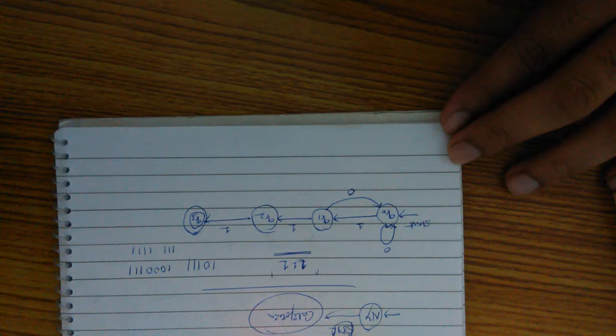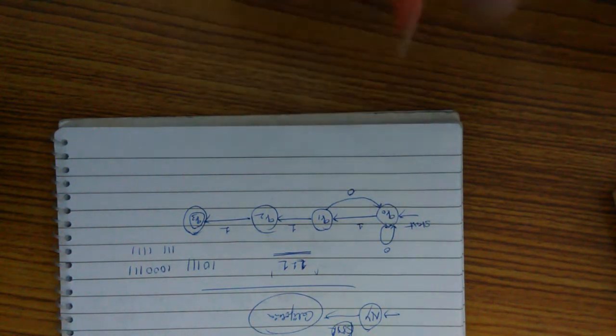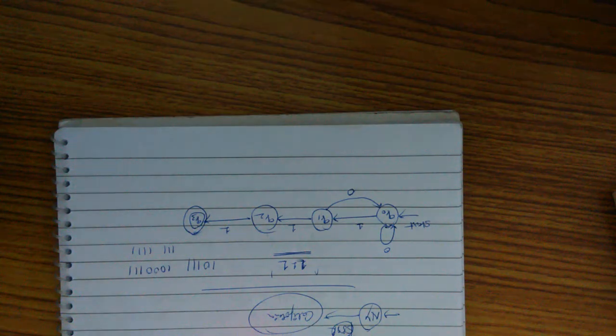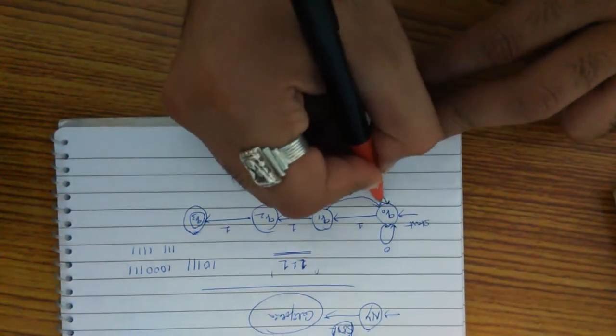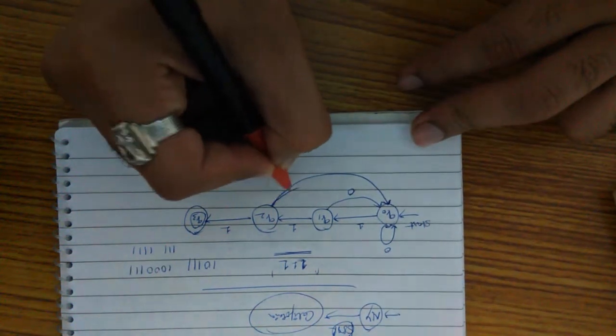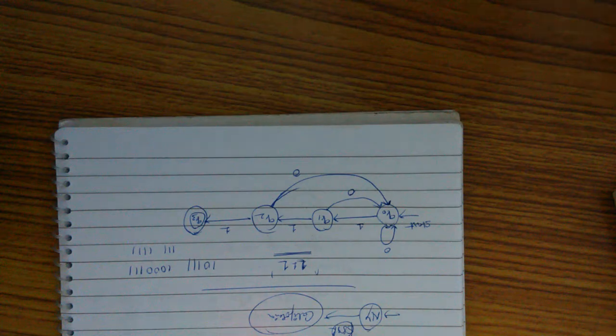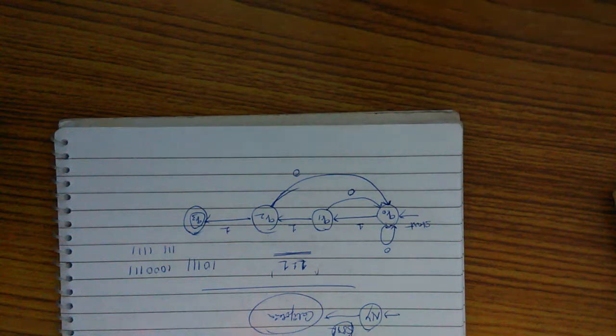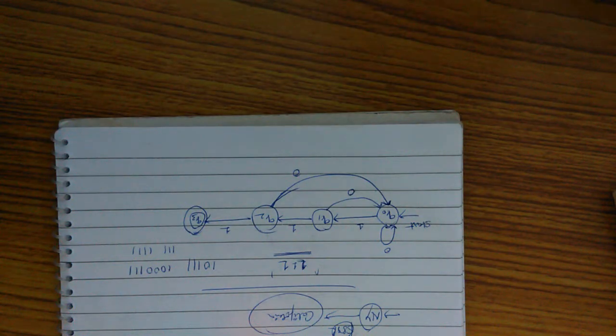This is also zero. And now first string is zero done, second string is zero done. Now you have the third string zero. Now what you have to do? To send it back, right? So only when there are three ones straight, then you have to be in the final state, so it will accept that string.